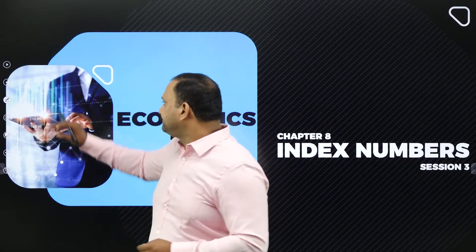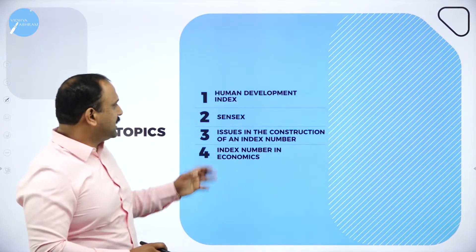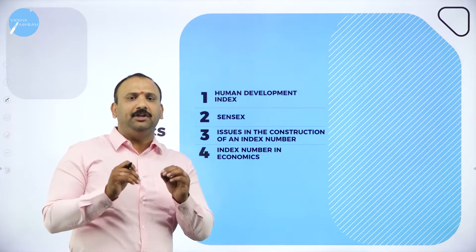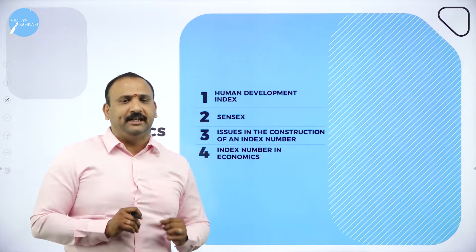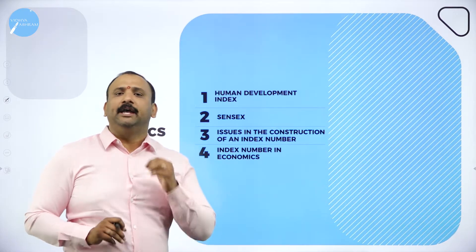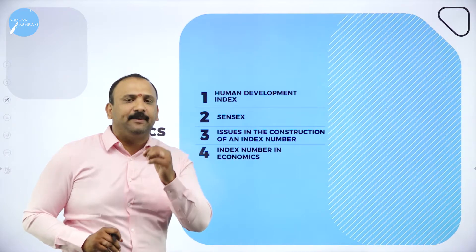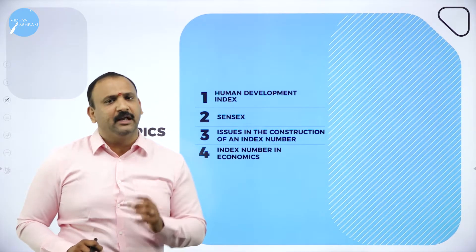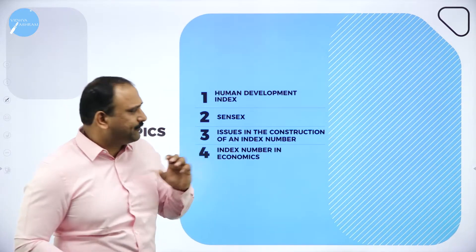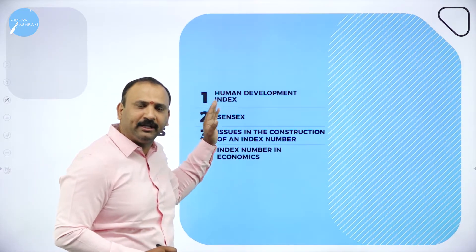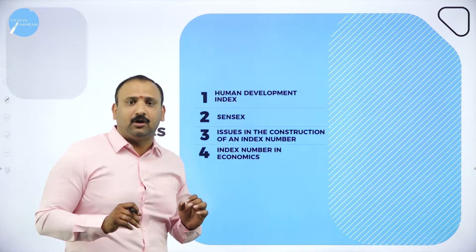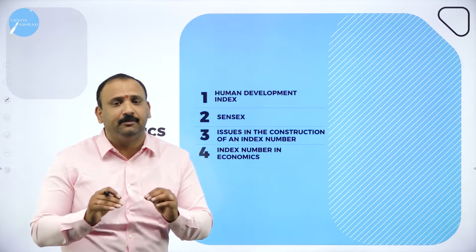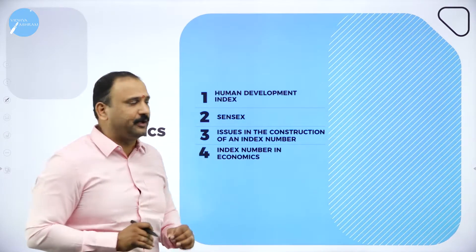Moving forward, these are the topics we are going to cover today. Human Development Index — a very new and a very important index that has been measured worldwide in order to study the developmental value of human beings in each and every country. This involves a lot of social factors, and this particular Human Development Index matters a lot for most countries because that's what makes their country the most livable, likable, and the best country in the world.